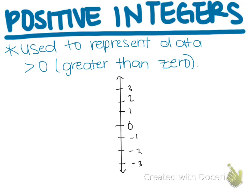If your number line is vertical, or up and down, then the positive integers are above the zero. These are positive integers.